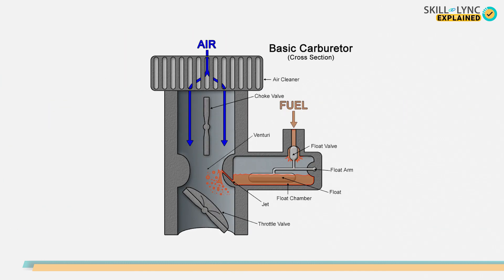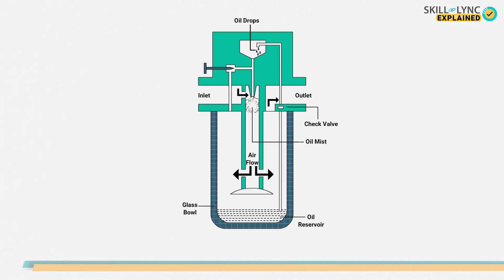The lubricator works on a principle similar to petrol-air mixing in a car's carburetor. As the air enters the lubricator, a venturi ring causes the velocity to increase. Due to this, a pressure reduction is observed, which causes the oil to be drawn up via a riser tube.